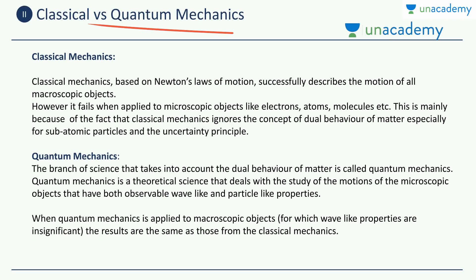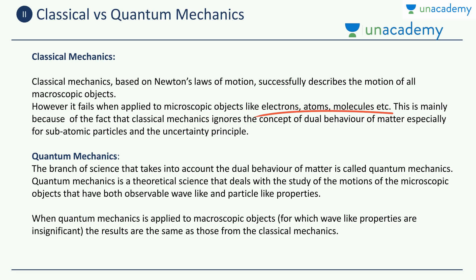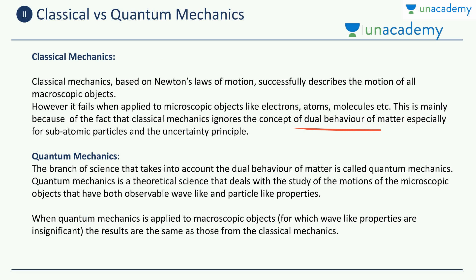Let us learn the difference between classical mechanics and quantum mechanics. Classical mechanics is the simple Newtonian mechanics which deals with the movement of normal objects like humans, trucks, or a cricket ball. Classical mechanics is based on Newton's three laws of motion and it successfully describes the motion of all macroscopic objects like trucks, cars, and balls. However, it fails when applied to microscopic objects like electrons, atoms, and molecules — mainly because classical mechanics ignores the concept of dual behavior of matter for sub-atomic particles and the uncertainty principle.